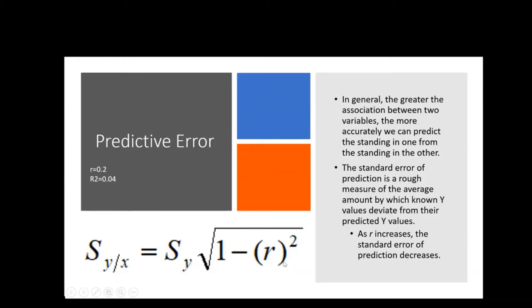If I take 1 minus 0.04, that gives 0.96. If I take the square root of 0.96, that whole piece multiplied times the standard deviation of y is 0.979 — almost 1. Because there's very little utility in knowing how many siblings you have to predict your test score, the variability in test scores is roughly the same as it would have been had I known nothing about you at all.